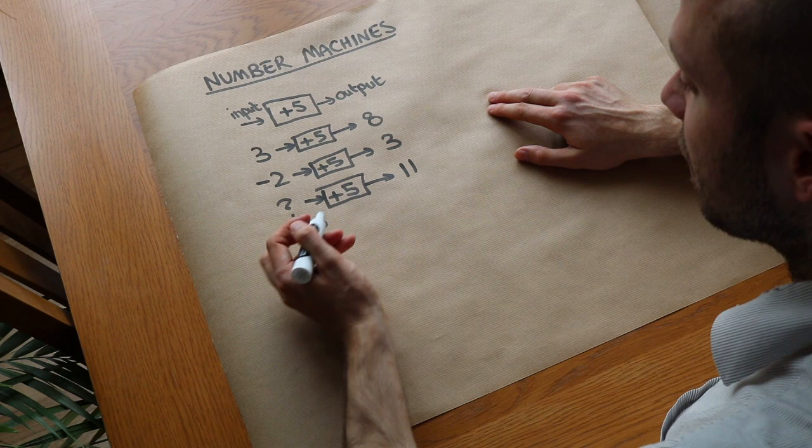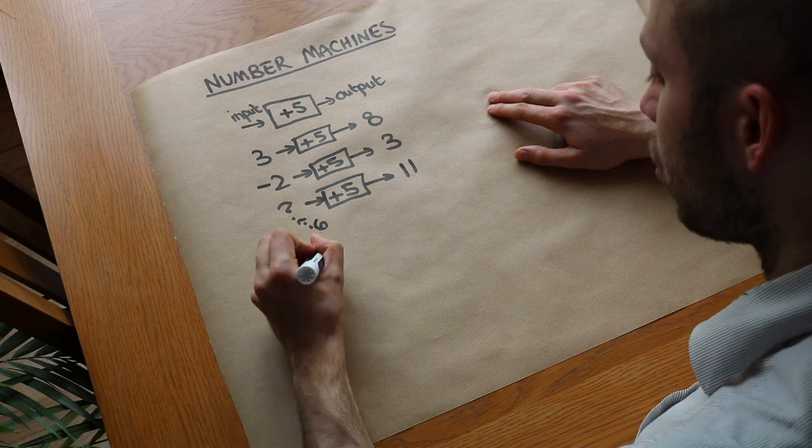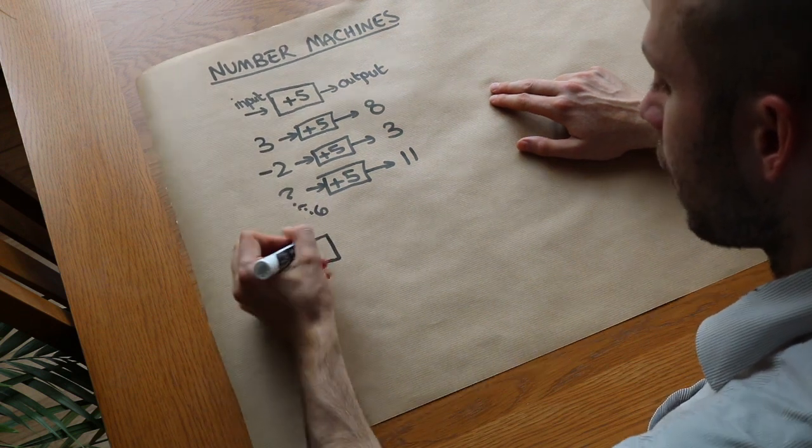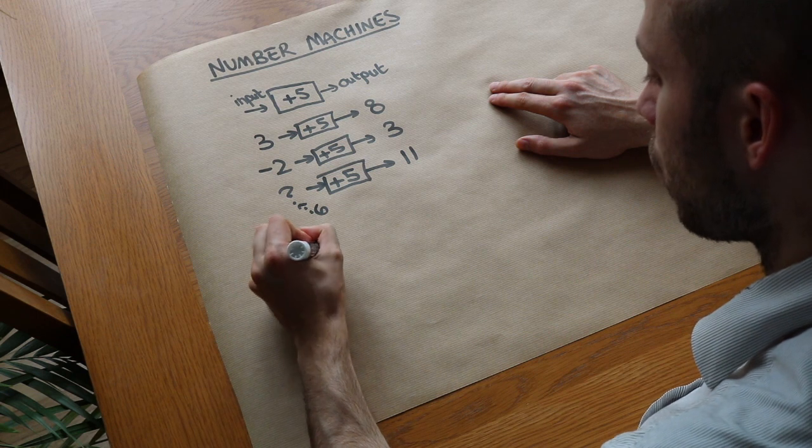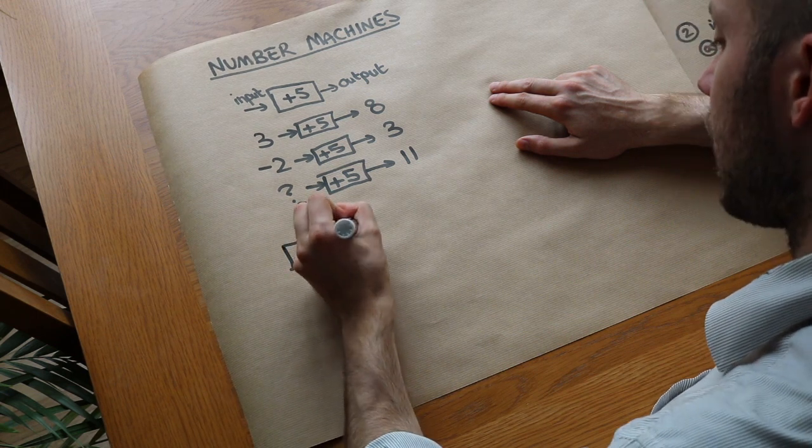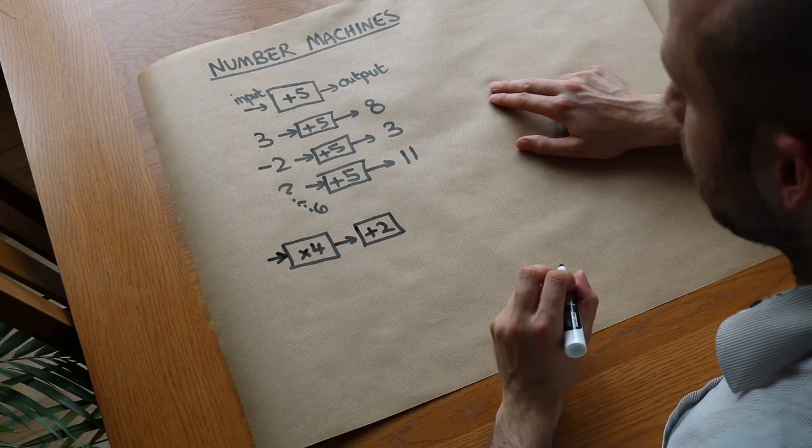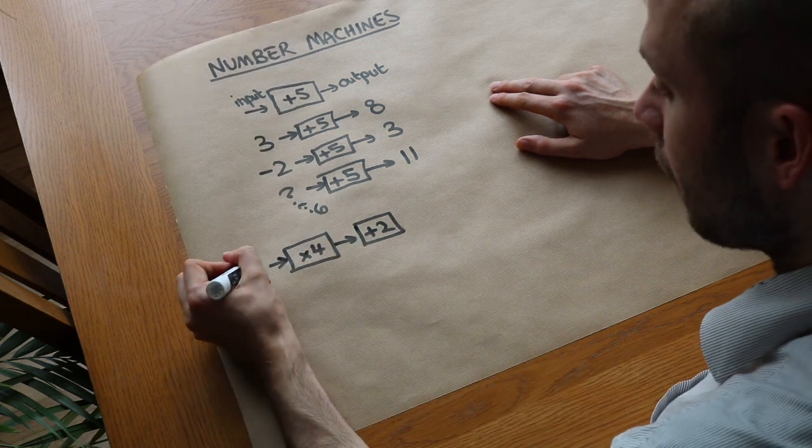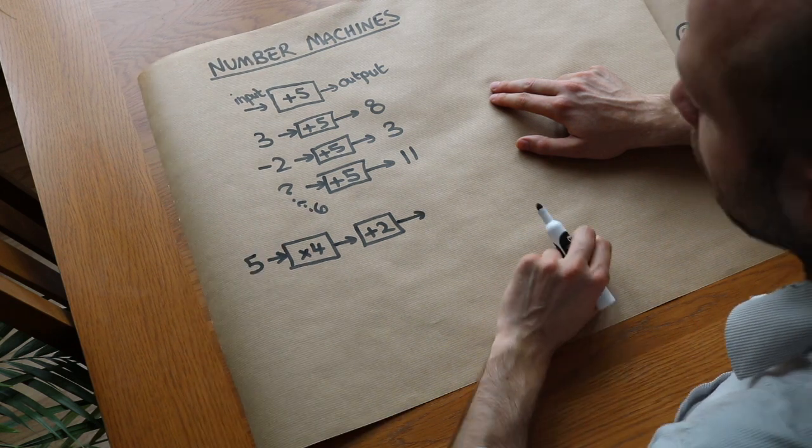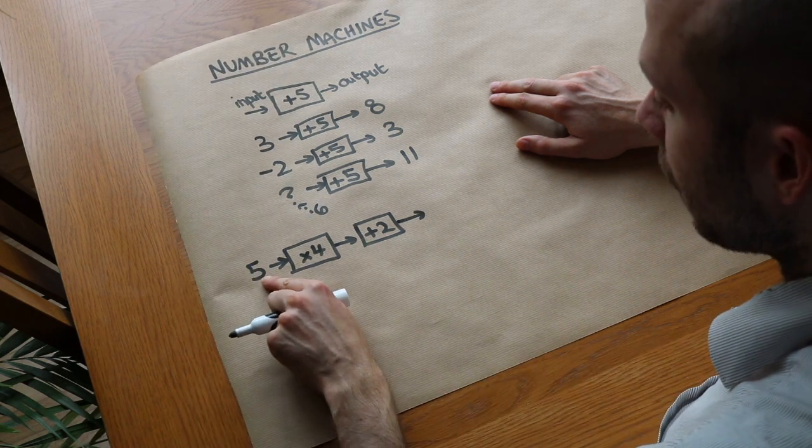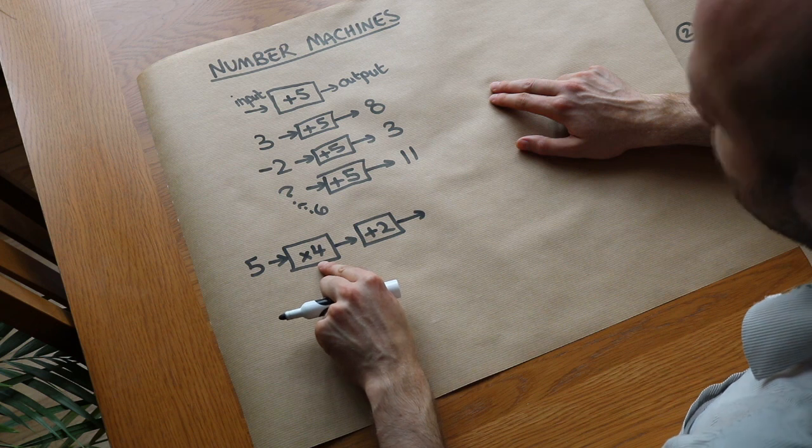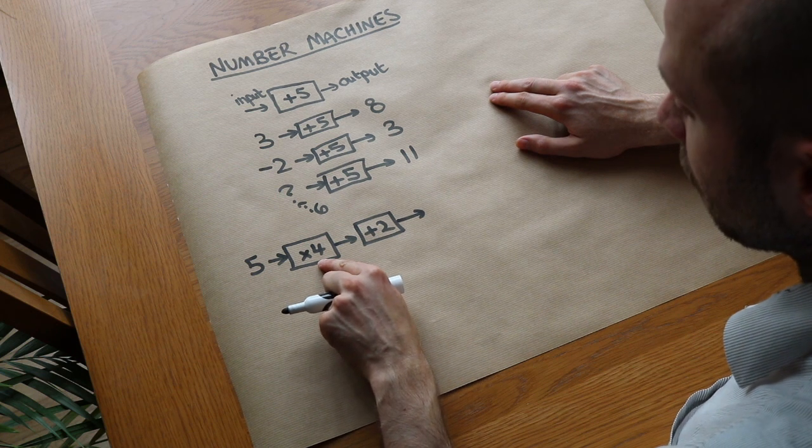You can also chain these together. So if you had two number machines chained together, we could have say times by 4 and we have say plus 2. Then if I have an input of say 5, then what is the overall output going to be? Well the 5 is the input, it goes through this number machine which multiplies it by 4. 5 times 4 is 20.